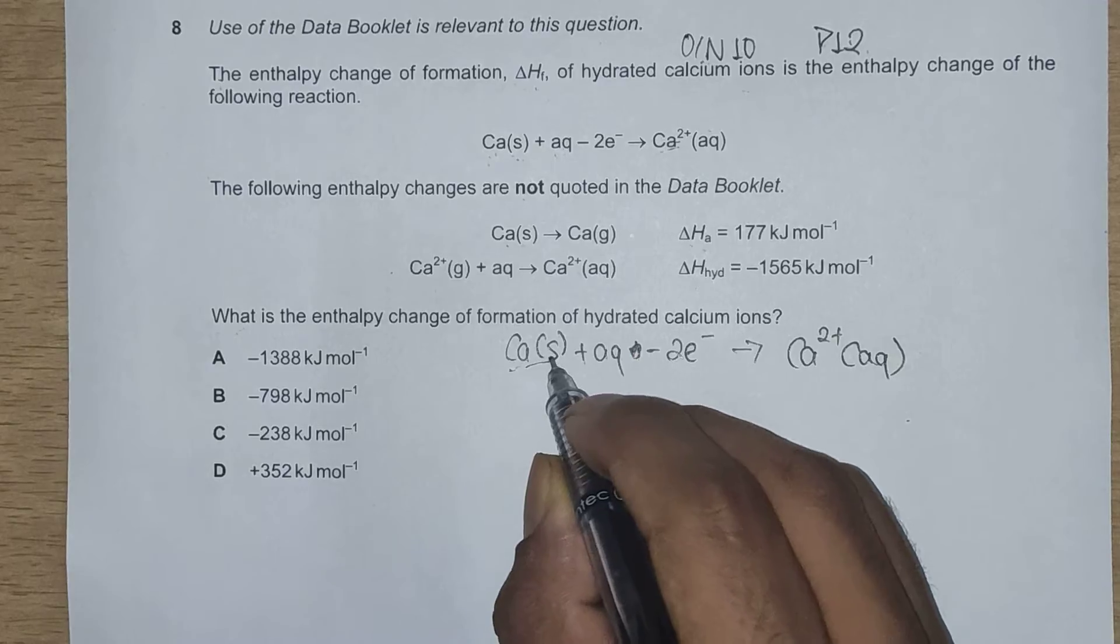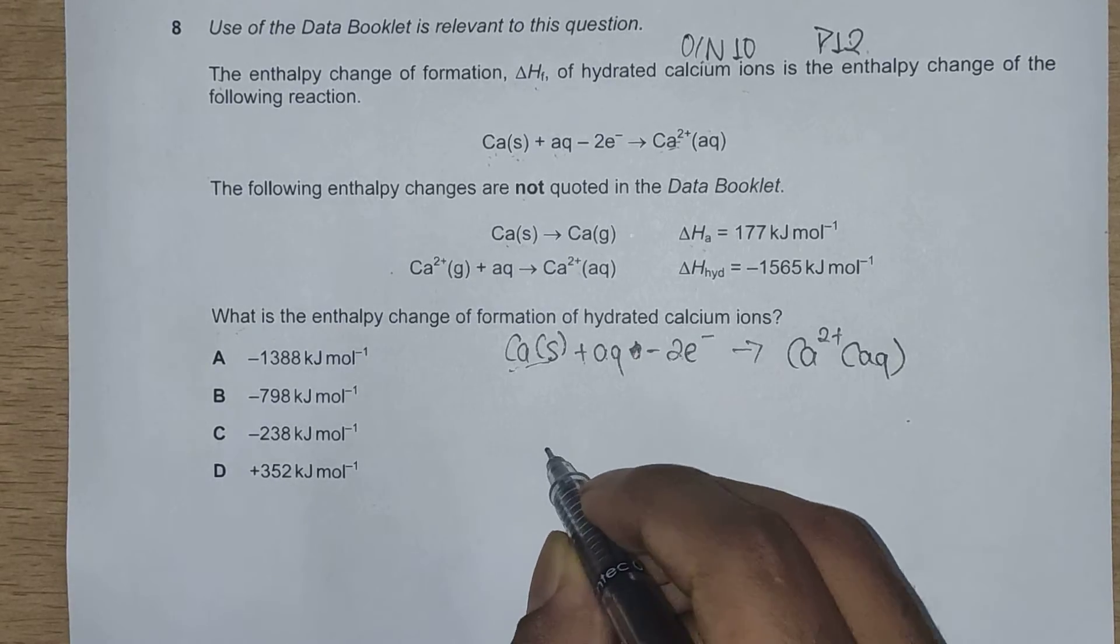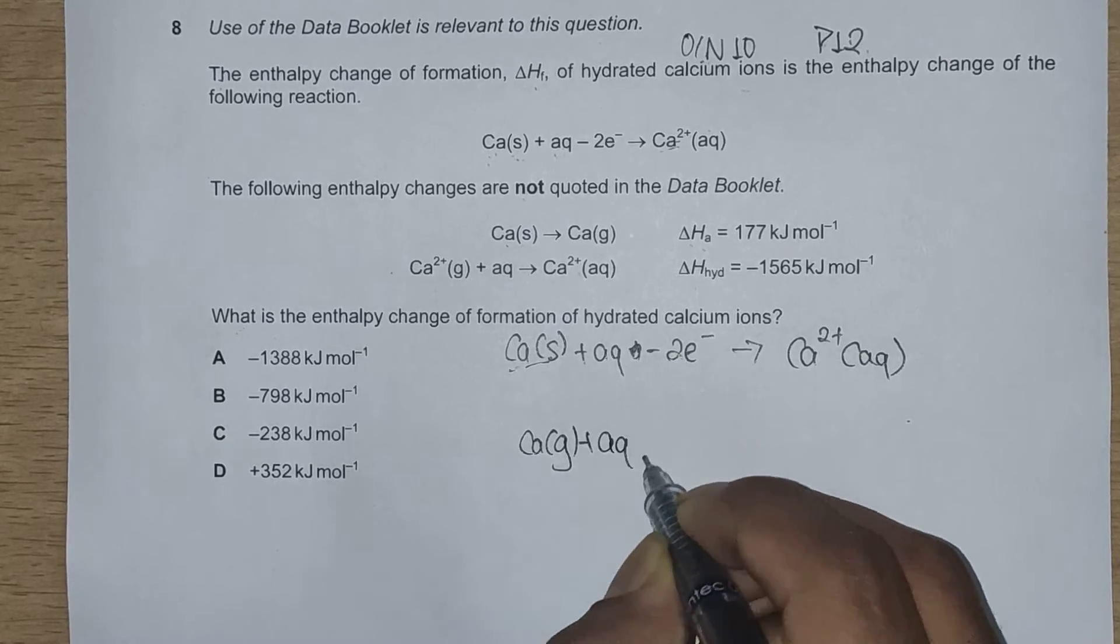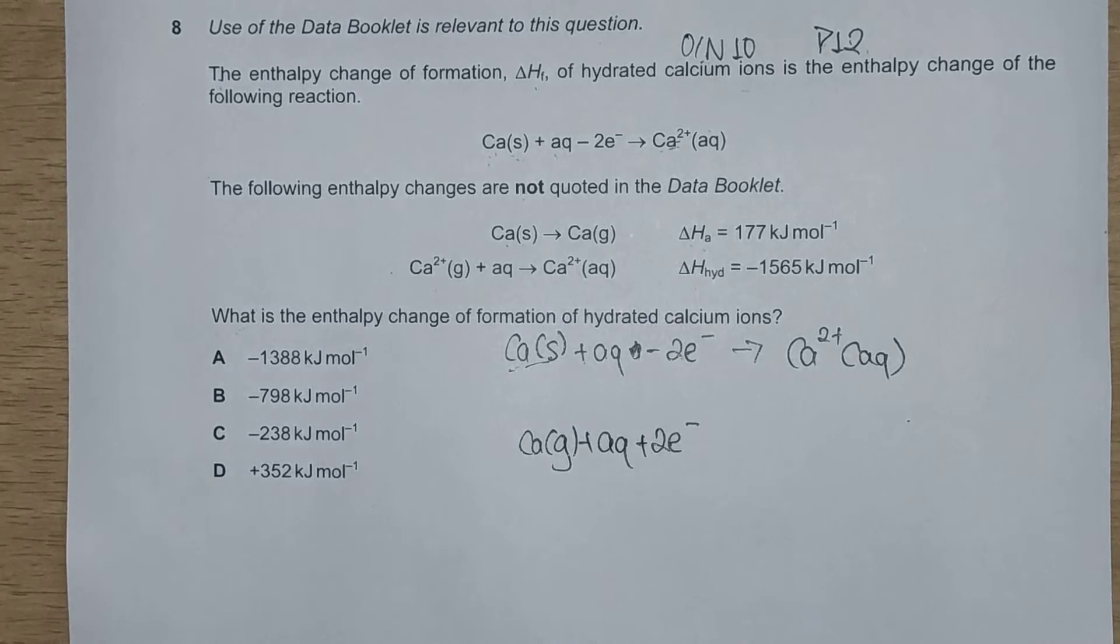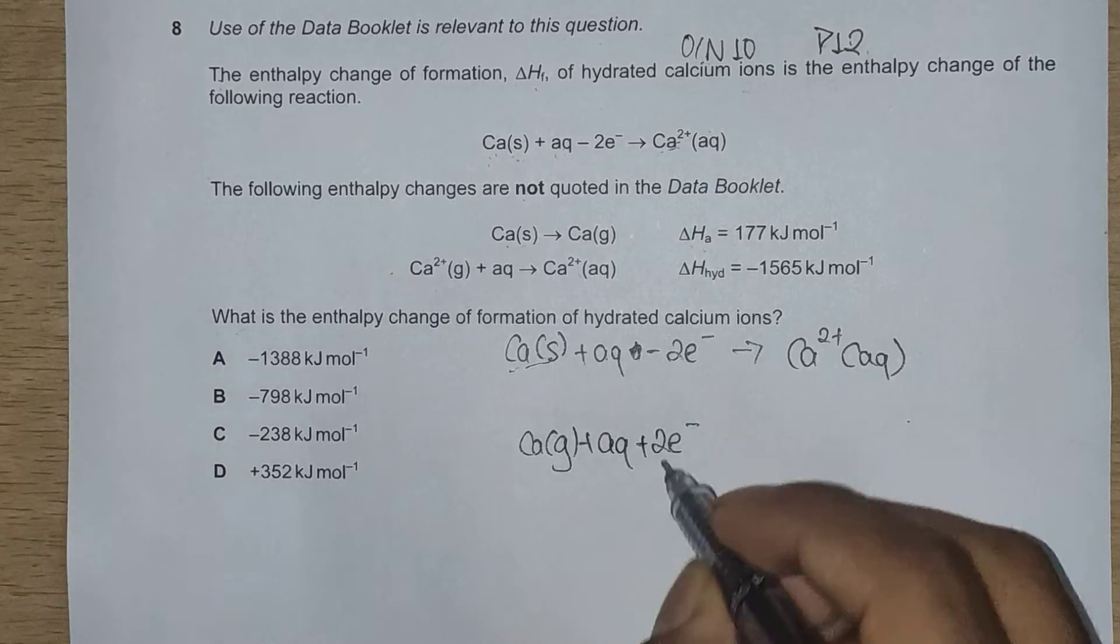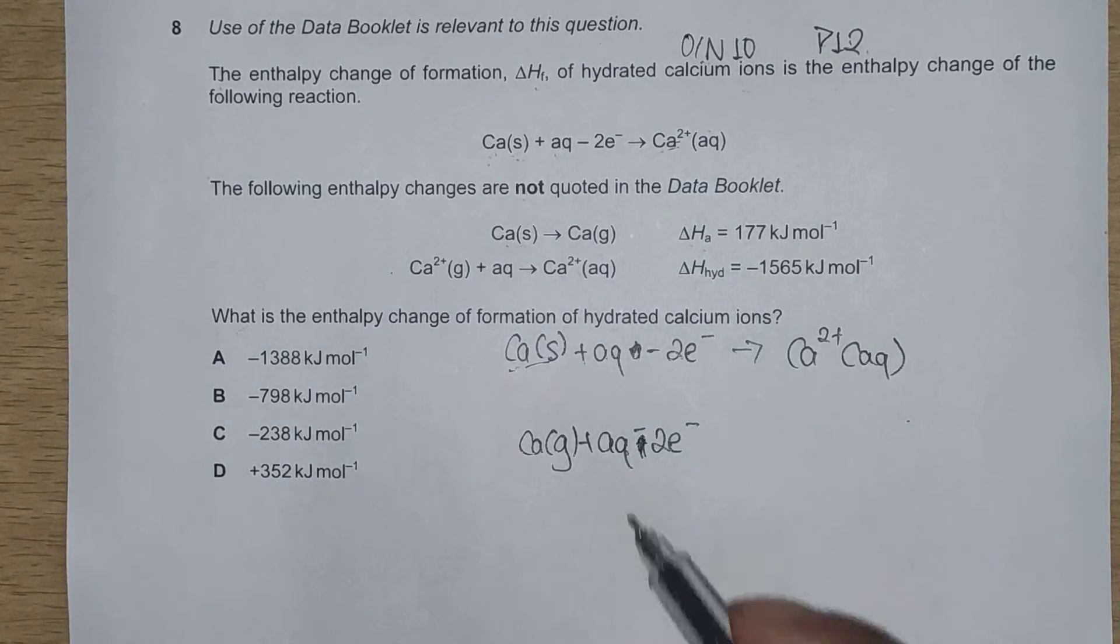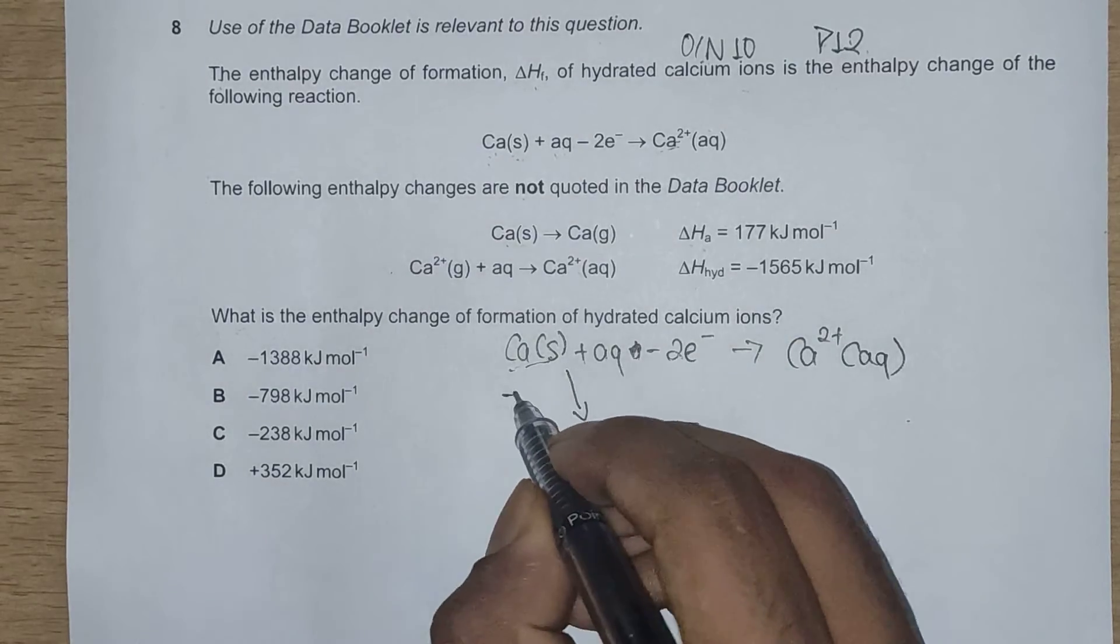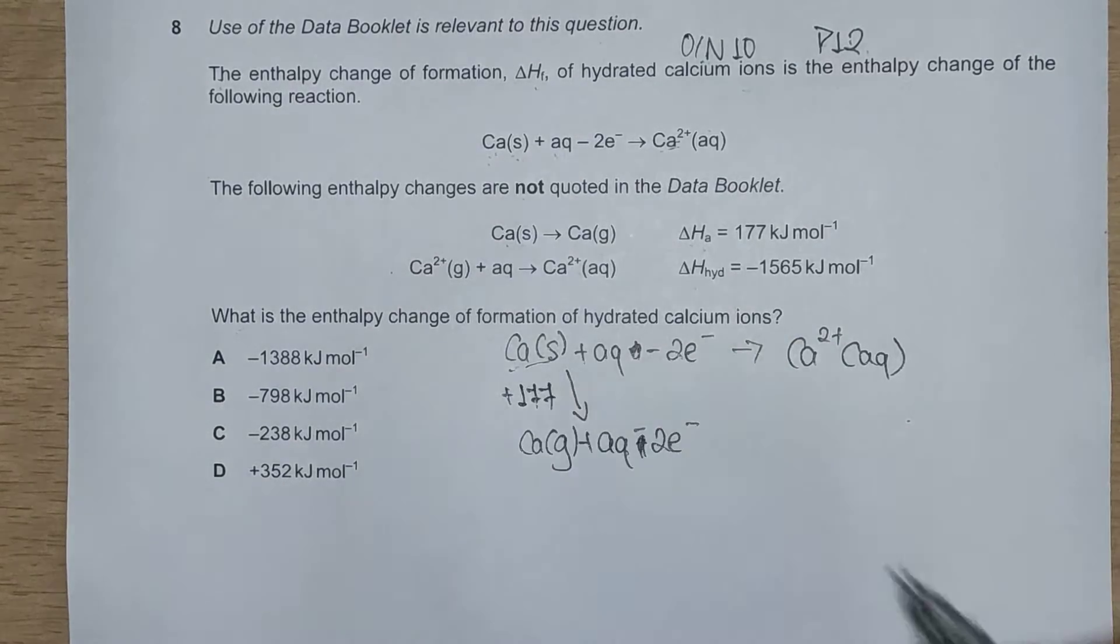Going step by step, we'll first atomize this calcium into gaseous calcium. Changing a solid into gas, we'll have calcium gaseous plus aqueous plus minus two electrons. That means we'll have an arrow going from here and its value is plus 177 kilojoules per mole.